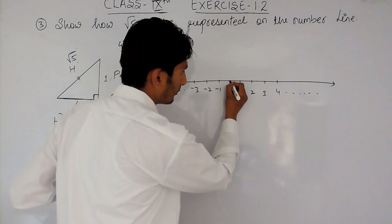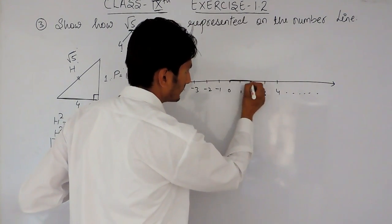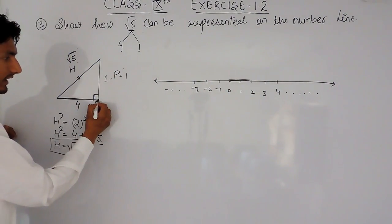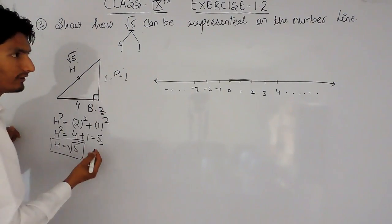if I, from here, if I count 2, so this will be the base here and from this point, I have to draw perpendicular, the length of this perpendicular must be 1.